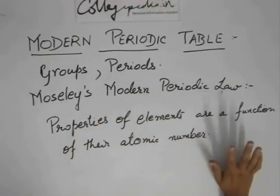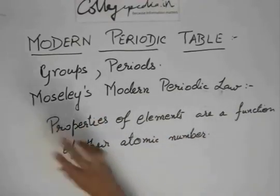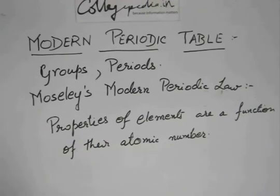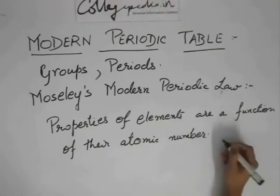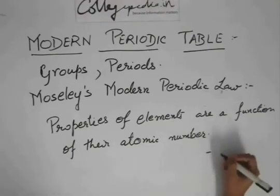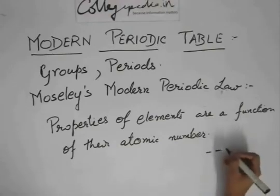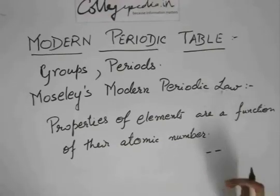You can get a question like what is the modern periodic law. You just have to write this one simple sentence: that the properties of elements are a function of their atomic number. Now, what does this mean? It is that the atomic number of any element will determine its property.